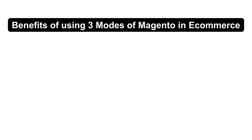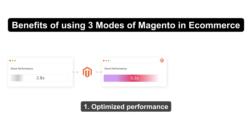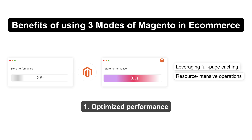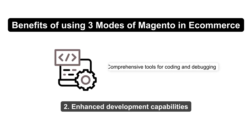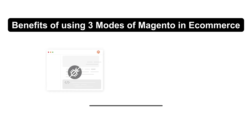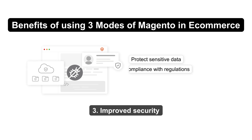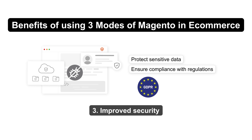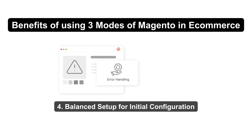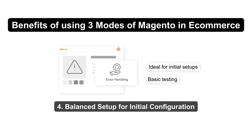Let's look at the benefits of using the three modes of Magento in e-commerce. Production mode boosts your store's speed and efficiency by leveraging full-page caching and minimizing resource-intensive operations. Developer mode provides comprehensive tools for coding and debugging, necessary for customization. Production mode also tightens security measures to protect sensitive data and ensure compliance with regulations like GDPR and PCI DSS. Default mode offers a balanced environment, ideal for initial setups and basic testing.